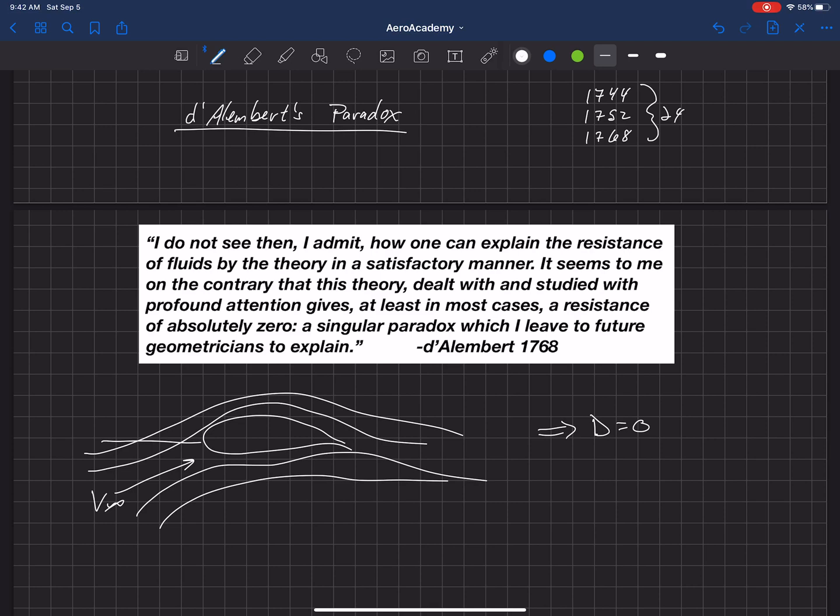And so now today, we understand that actually drag comes from viscosity in the boundary layer. It's the shear stress on the surface. So if we zoom in on the surface of this, we actually have some boundary layer here where that velocity slows down as it approaches the surface and is exactly zero at the surface. And the shear stress on that wall, remember, is related to the slope of the boundary layer in the limit as we approach the wall. And so that shear stress, if you integrate that along the surface,